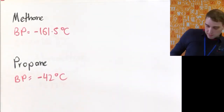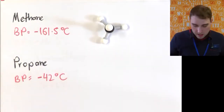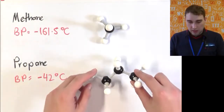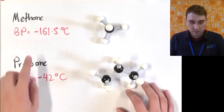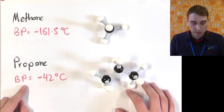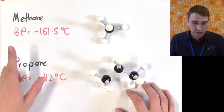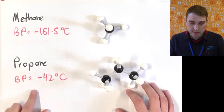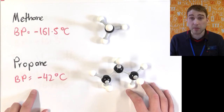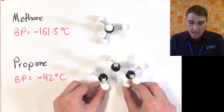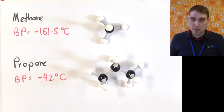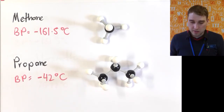Let's compare two molecules: methane and propane. The boiling point of methane is minus 161°C and the boiling point of propane is minus 42°C. So there's a big difference in boiling point between those. We ask ourselves what's the difference in the dispersion forces and the strength of the dispersion forces that causes that difference in boiling point.